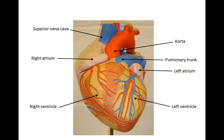The other blood vessel identified on this model is the superior vena cava. You may also see it identified as the anterior vena cava in some diagrams. This blood vessel is a vein through which blood returns back to the heart from above, such as from the arms, the neck, and the head.